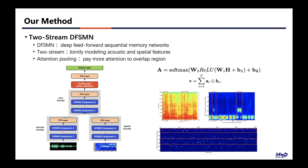The architecture of two-stream deep DFSMN is shown in this figure. The output of the joint encoder is fed into pooling layers. In addition to the commonly used mean pooling, we propose an attention pooling layer.